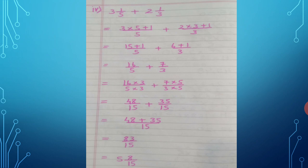Cross multiply: 16 upon 5 multiplied by 3, plus 7 upon 3 multiplied by 5. This gives 48 upon 15 plus 35 upon 15. 48 + 35 = 83 upon 15. On division, the answer is 5 and 8 upon 15, which is a mixed number.